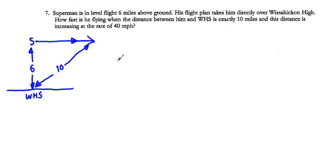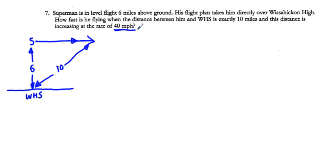Problem 7: Superman is in level flight 6 miles up. His flight plan takes him directly over Wissahickon High School. How fast is he flying when the distance between him and the school is exactly 10 miles, and that distance is increasing at a rate of 40 miles per hour? We have the school, 6 miles altitude, Superman flying to the right, so the 10-mile distance is a diagonal hypotenuse. dH/dt = 40 mph.